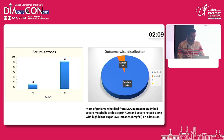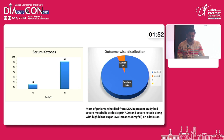Serum ketones were measured, and 86% of patients had serum ketones greater than 5. Among all patients, 94% survived. Most of the patients who died from DKA in the present study had severe metabolic acidosis with pH less than 7, severe ketosis, and a high blood sugar level with a mean of 425 mg/dL on admission.